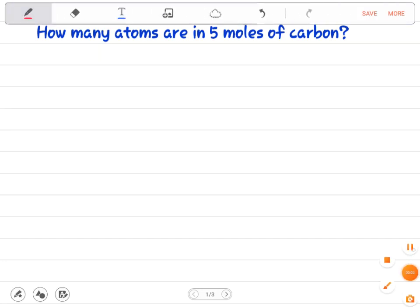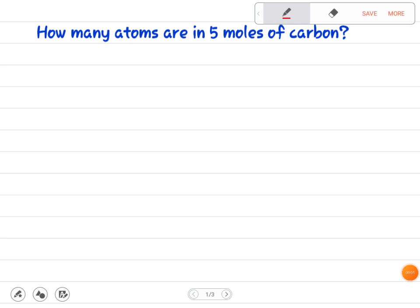Okay, so how many atoms are in five moles of carbon? To answer this question, you need to know Avogadro's constant number, which says that one mole of any substance contains 6.02 times 10 to the power 23 atoms.